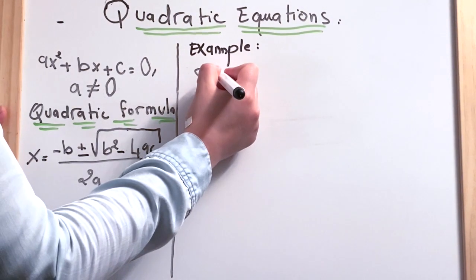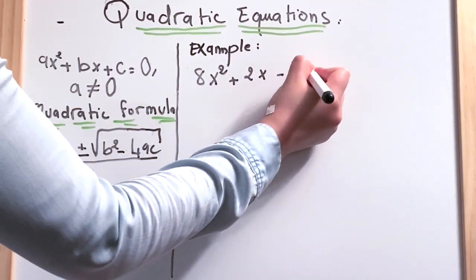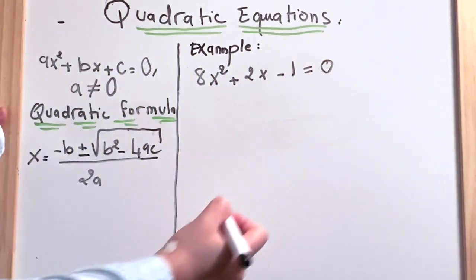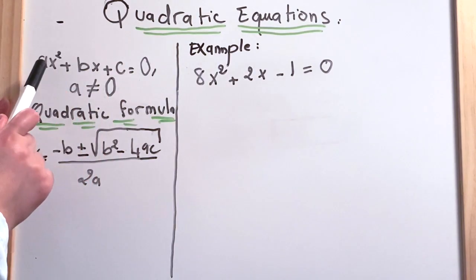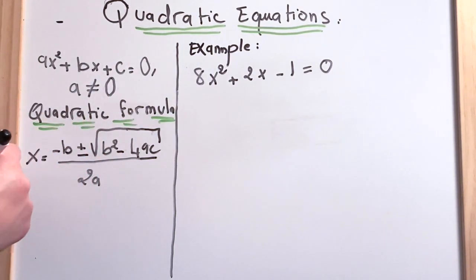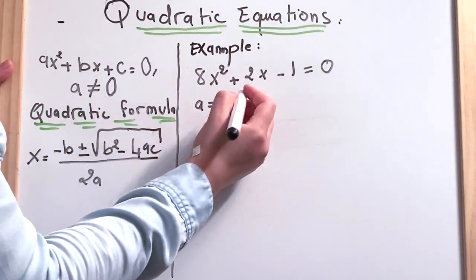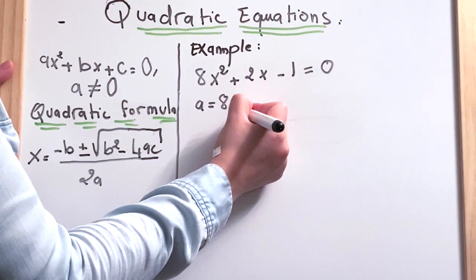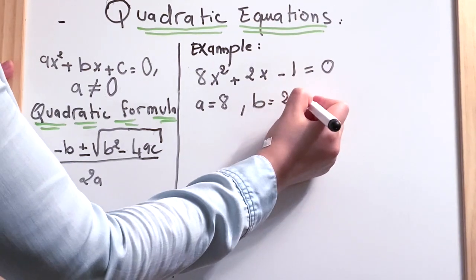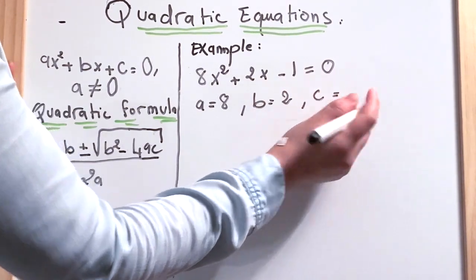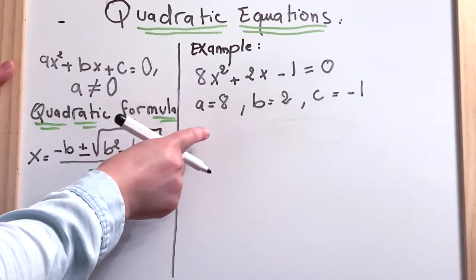Now we're going to move on to an example: 8x squared plus 2x minus 1 equal to zero. When we have the equation we're going to find out the a, b, and c. In this equation, a is the number in front of x squared, so it's 8. B is the number in front of x, which is 2. And c is the number without the x, so it's minus 1.